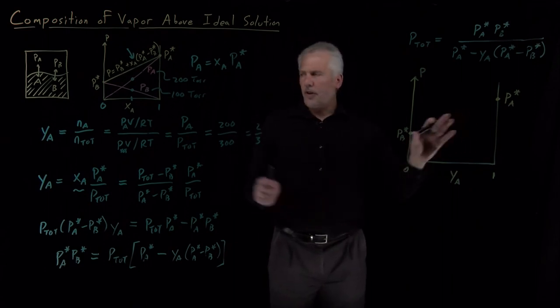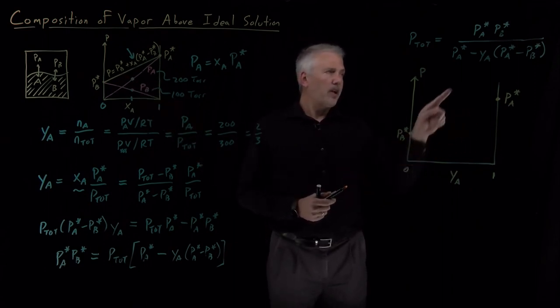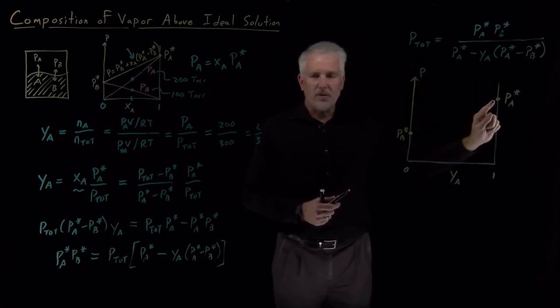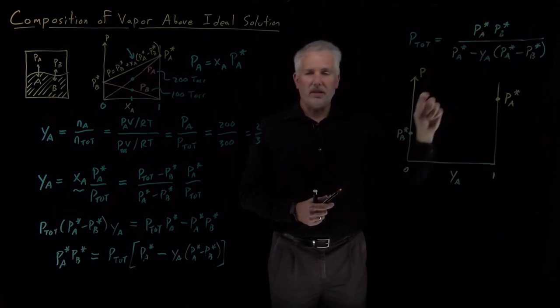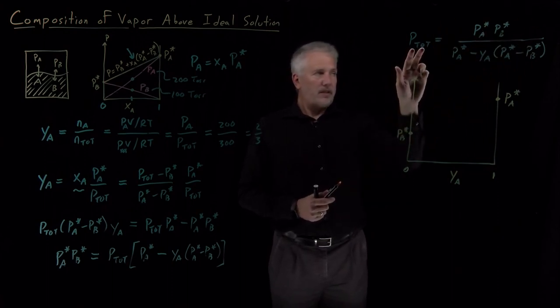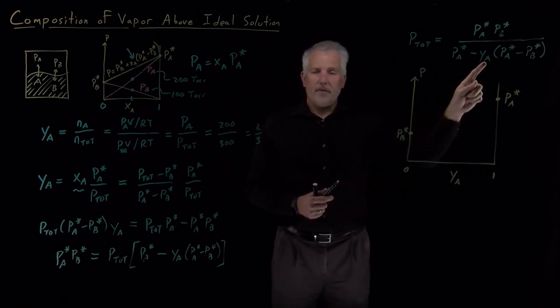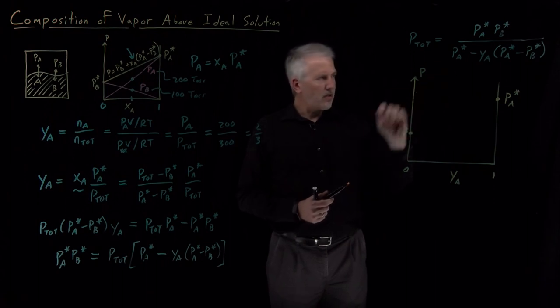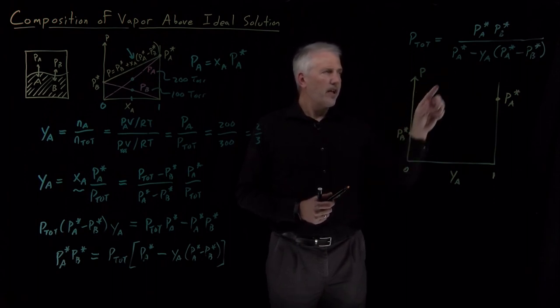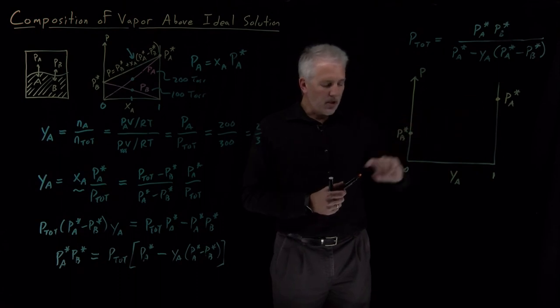So far this is looking exactly like it did in the case we considered before, but we can look at this equation and know that it's not going to be a straight line connecting these two. This is no longer the equation of a straight line. It doesn't look like a constant plus a slope times the variable we're interested in. It's a nonlinear function.